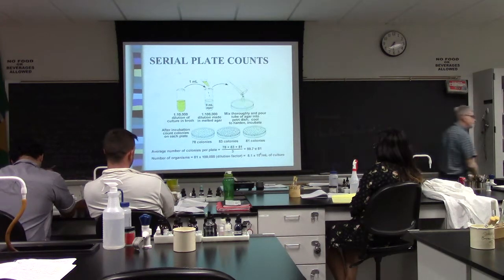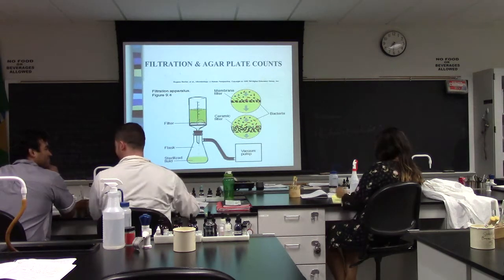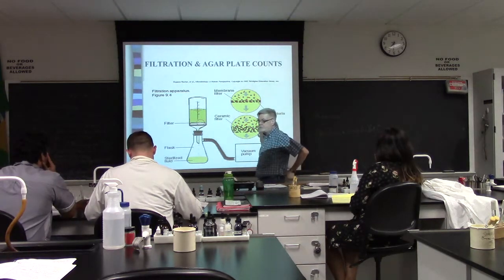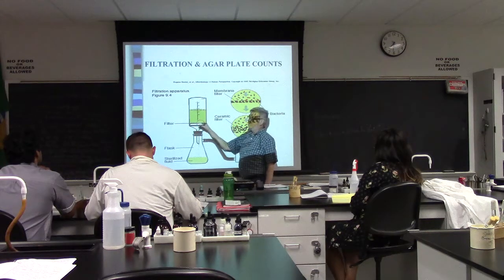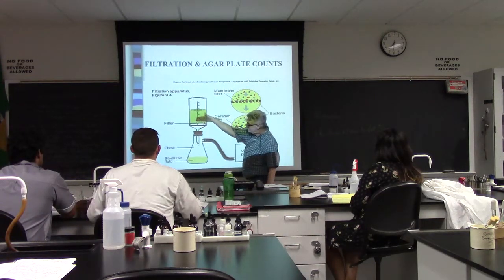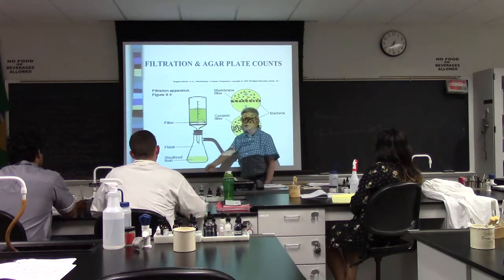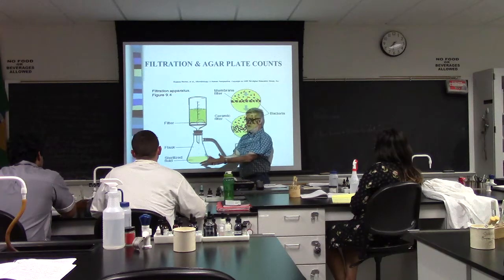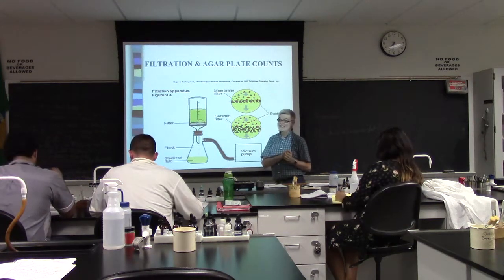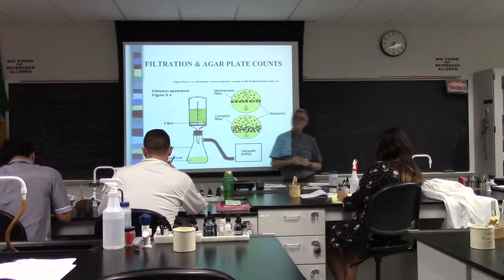Next is the filtration method — formerly called the millipore method. You make a filter that's 0.22 micron; no bacterium is smaller than that. Pour your liquid through, hook it to a vacuum — all bacteria stay on the filter. Pick up the filter with tweezers, lay it down on an agar plate, make replicates, put in the incubator, come back the next day, take the average — great live count. Same defect: you find out tomorrow what today's count is, and you have to keep all equipment sterile.